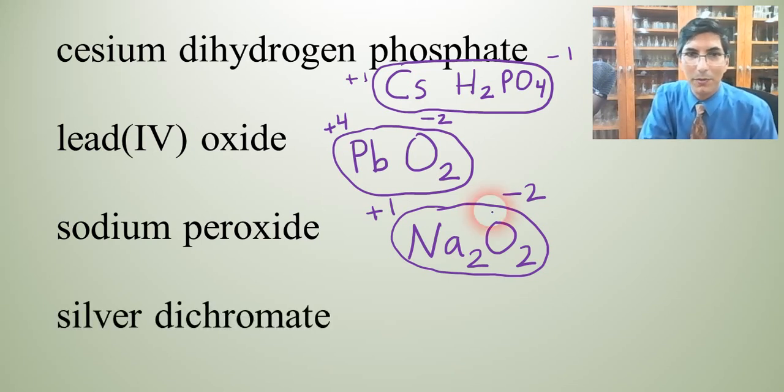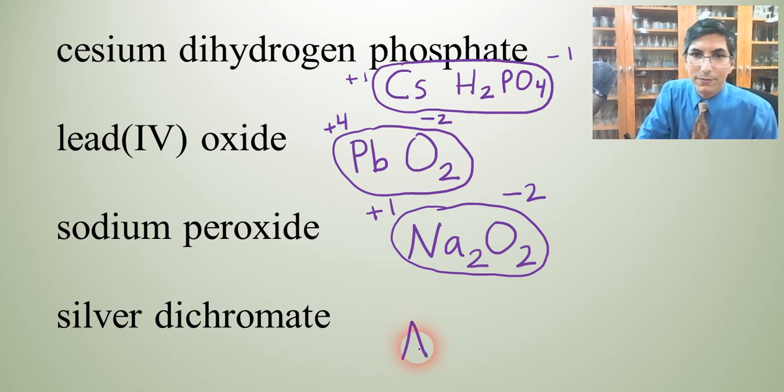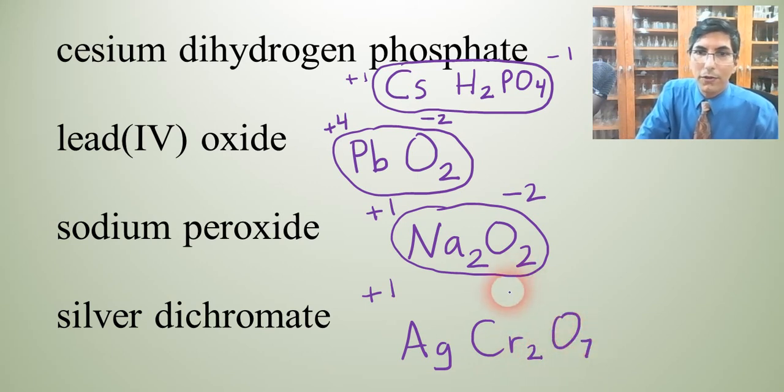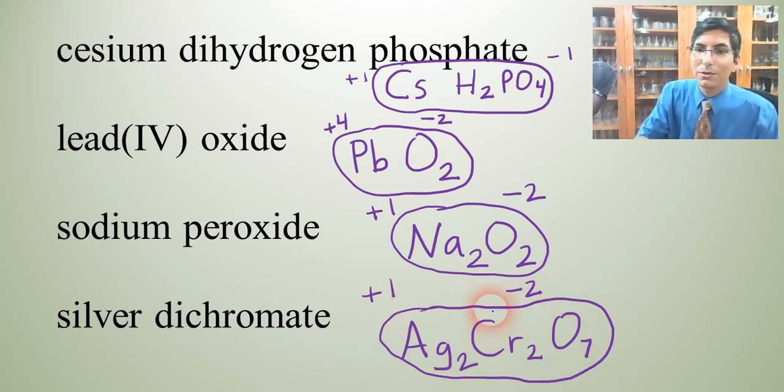Let's try another example. We have silver dichromate. Silver is Ag with a positive 1, and dichromate is Cr2O7 with a negative 2. So once again, it looks like we have to swap them, so the 2 goes down here on silver. So we can see we have a formula unit with 11 atoms in it: Ag2Cr2O7.